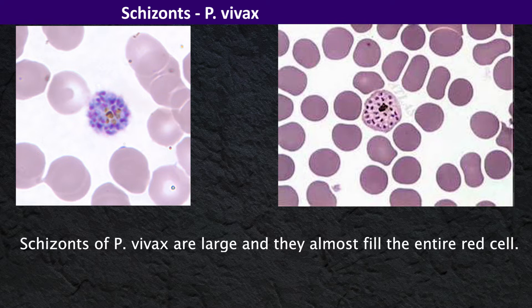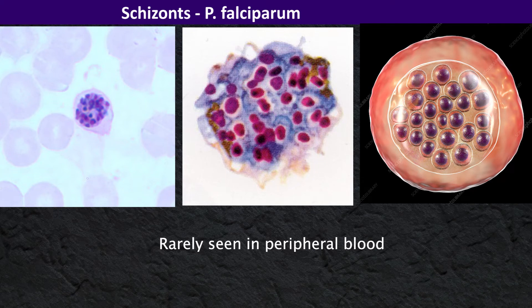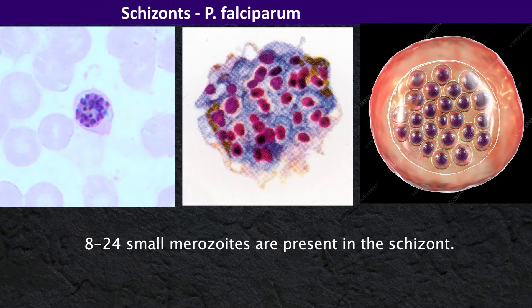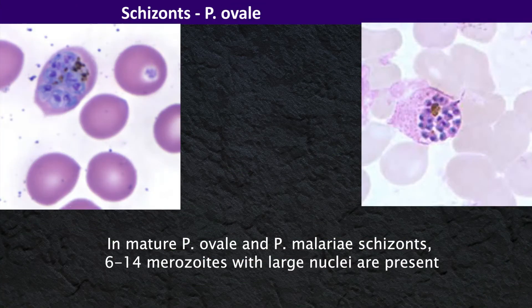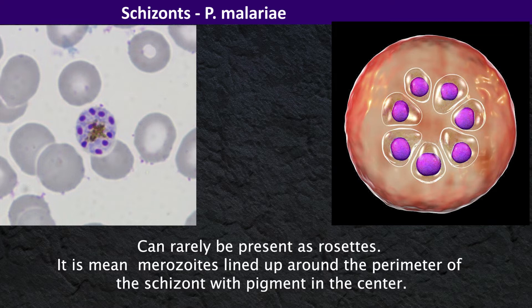Schizonts of Plasmodium vivax are large and they almost fill the entire red cell; 12 to 24 merozoites are present. Schizonts of Plasmodium falciparum are rarely seen in peripheral blood; 8 to 24 small merozoites are present. In mature Plasmodium ovale and Plasmodium malariae schizonts, 6 to 14 merozoites with large nuclei are present. Plasmodium malariae schizonts can rarely present as a rosette form, meaning merozoites lined up around the perimeter of the schizont with pigment in the center.